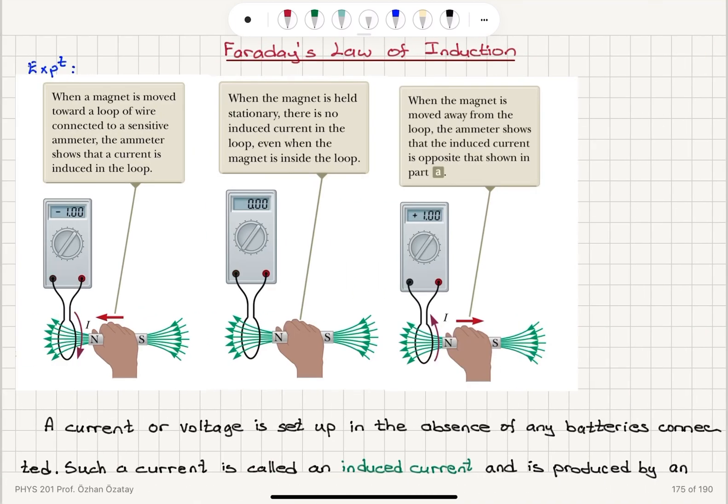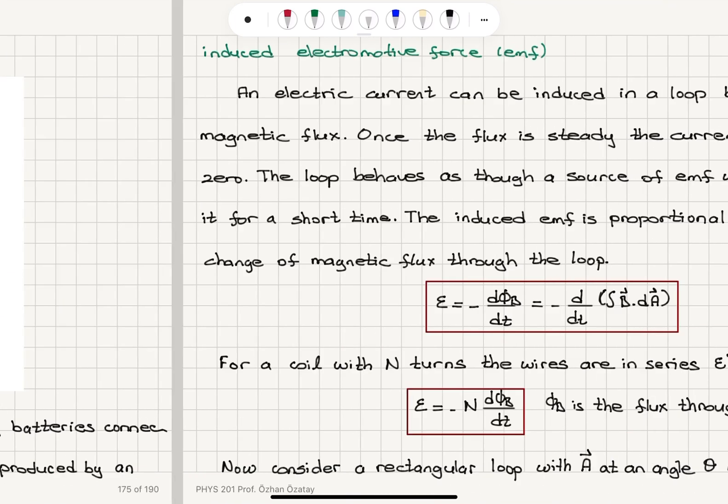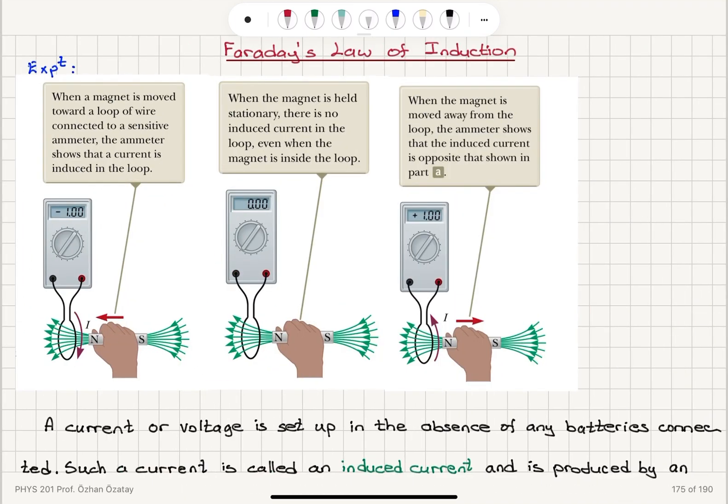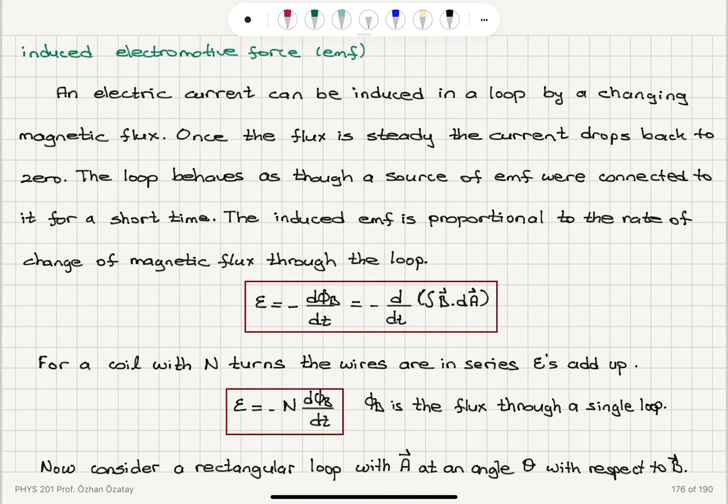If we have a coil with not a single loop, but several turns, capital N turns, the wires are in series and epsilons will add up. So we have several wires connected in series.